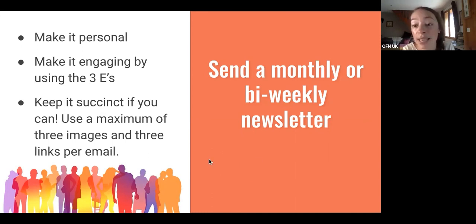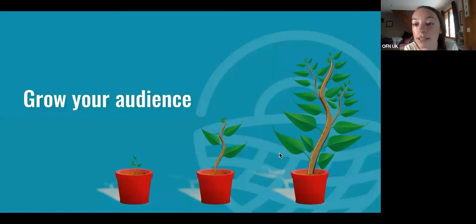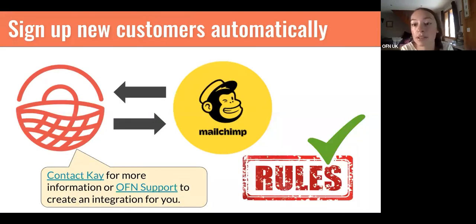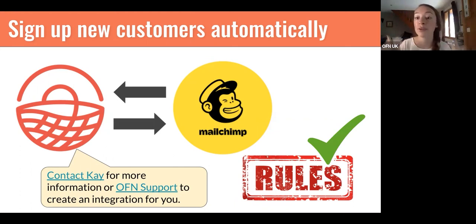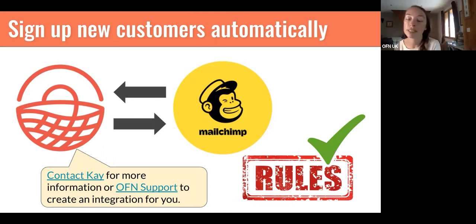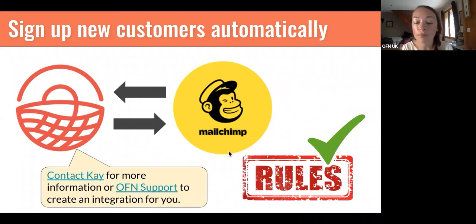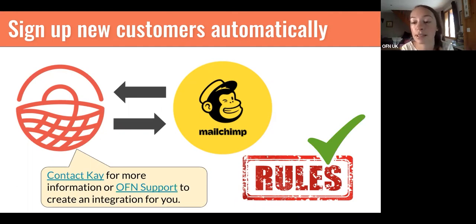A few tips on growing your audience. First, you can set up an integration between the OFN and Mailchimp, which means that whenever a customer buys with you on the OFN they automatically get subscribed to your Mailchimp list in a GDPR-safe way — we send a double opt-in email where they take the consent action. If you want more details on this, feel free to contact me directly as it's something we can get set up for you. This is a great way to start building your list — every new shopper on the OFN gets an invitation to sign up for your mailing list.